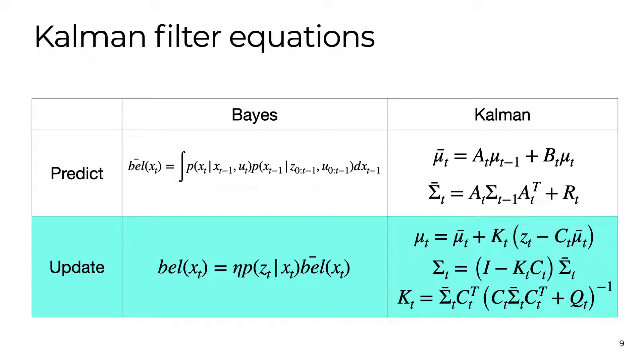Similarly with the covariance, the K matrix tells us how much we should reduce our uncertainty based on this new measurement that we just got.